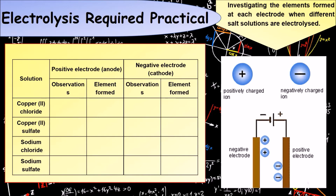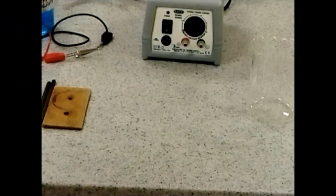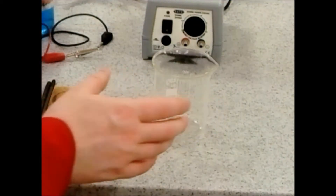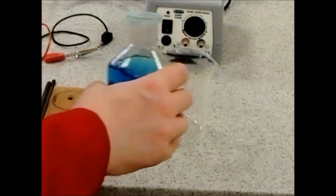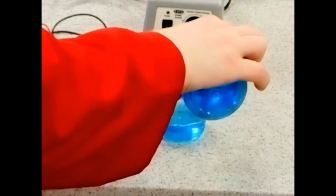The following short videos will show you how to set up the required practical and take you through the electrolysis of these four different substances. If you want to get the table down so you can physically write in what you observe at the positive and negative electrode for each substance, feel free. To start off, set up your electrolysis beaker, pour in your electrolyte — but don't pour in too much.